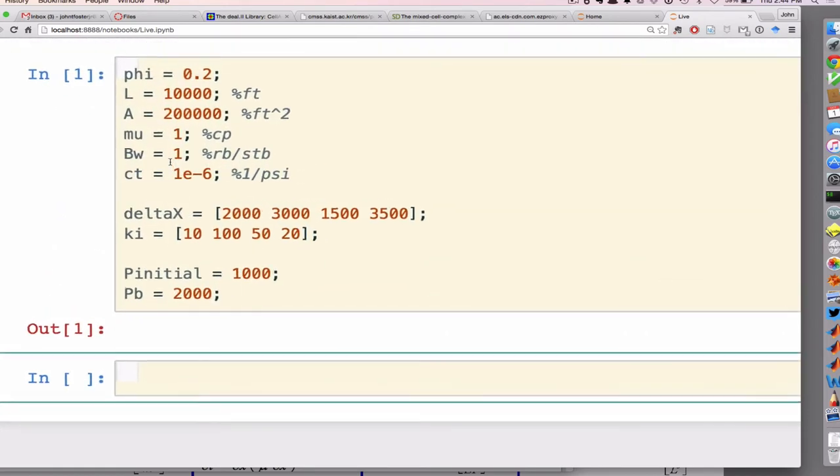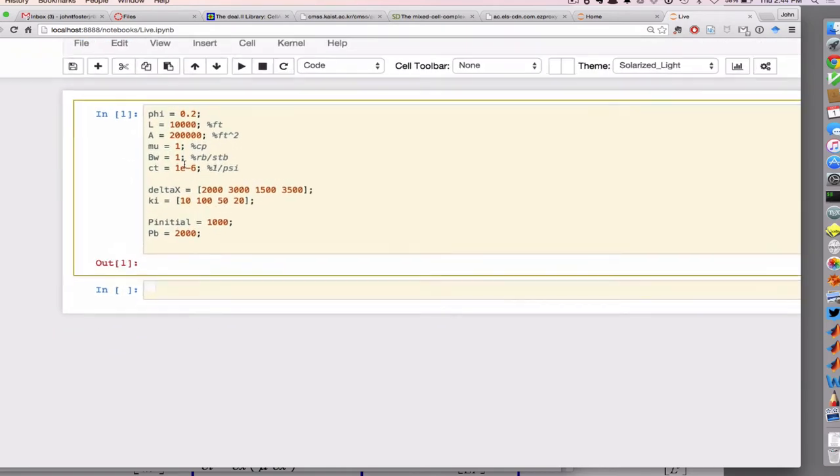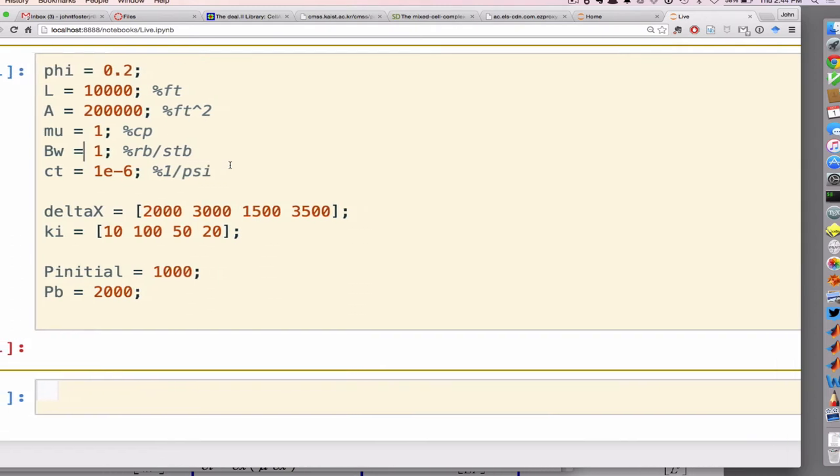By the way, I'm using this special program called Jupyter which allows me to write stuff in this notebook form. But the code I'm writing is just MATLAB. I thought it would be easier to see this because you can see the inputs and outputs very clearly from each step. I thought it would be easier to look at this way than doing it in the MATLAB command window, but you could absolutely do everything I'm about to do right from the MATLAB command window.